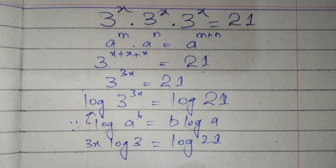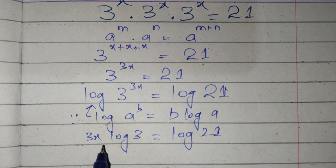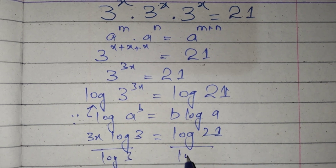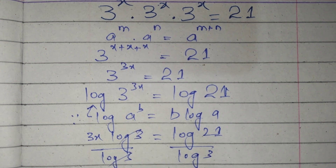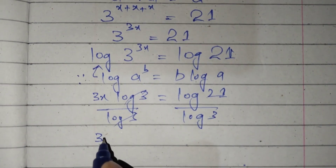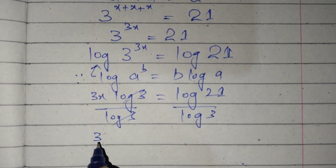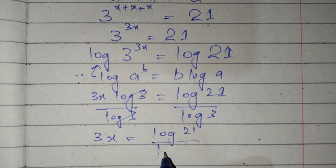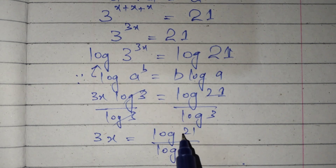Now we will divide both sides by log of 3. Log of 3 cancels on the left side, so 3x equals log of 21 divided by log of 3.